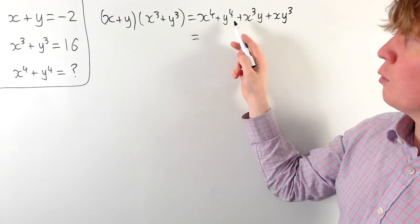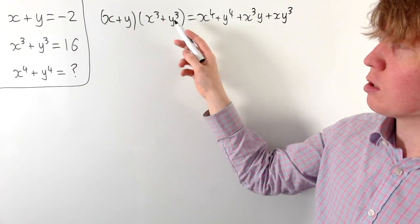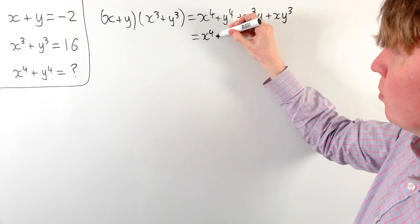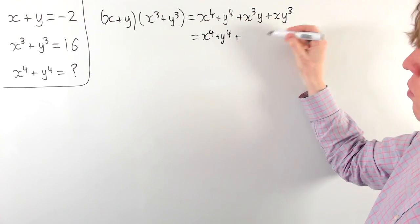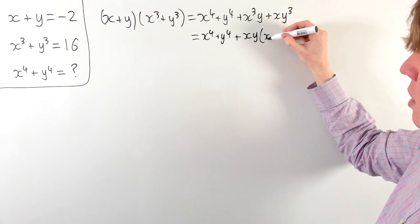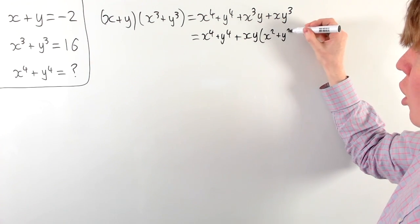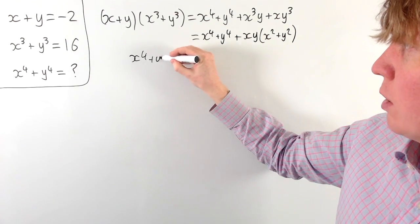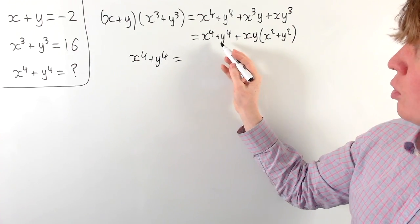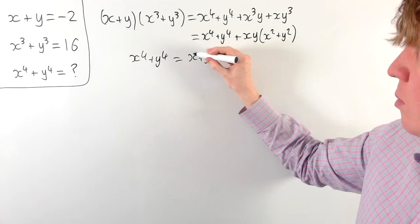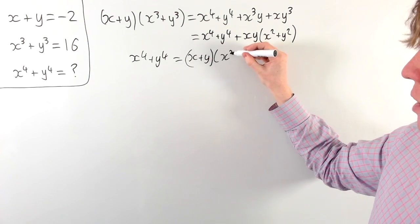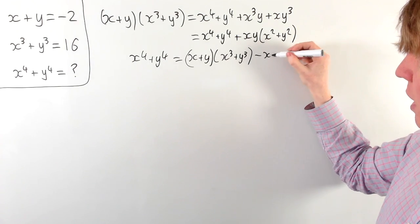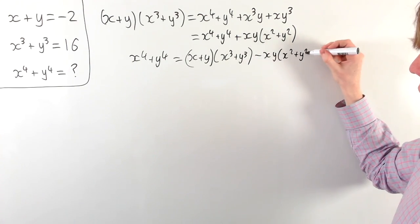So we can't immediately express x to the 4 plus y to the 4 in terms of these two quantities, but we can get close by writing this as x to the 4 plus y to the 4, and then factorising the remaining terms as xy times x squared plus y squared. This allows us to rearrange and make x to the 4 plus y to the 4 the subject, giving us x to the 4 plus y to the 4 equals x plus y times x cubed plus y cubed, then take away xy times x squared plus y squared.